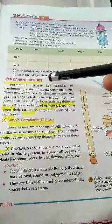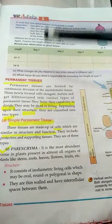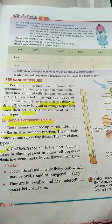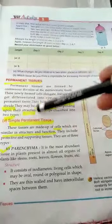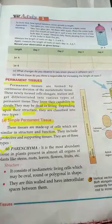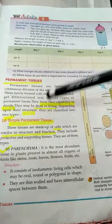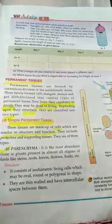Coming to permanent tissues — the second type of plant tissue. Permanent tissues are made up of cells which have lost their capability to divide. Meristematic cells continuously divide, whereas permanent tissue cells have lost their capability to divide. They may be dead or living. They are of two types: simple permanent tissue and complex permanent tissue. Simple permanent tissue is made up of cells which are similar in structure and function.